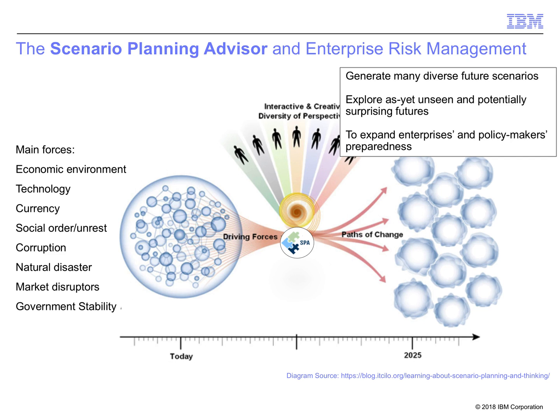The system includes tooling for domain experts to intuitively encode their domain knowledge and to capture their interests in world events. The interest profiles guide the continuous examination of current world state. Influenced by what is happening and guided by the encoded domain knowledge, AI planner-based reasoning generates a variety of scenarios.